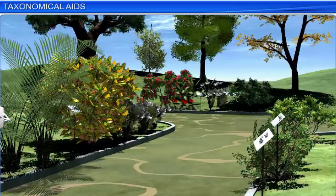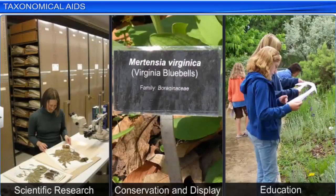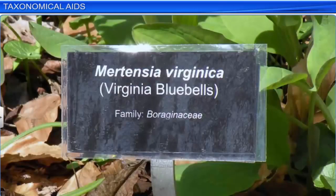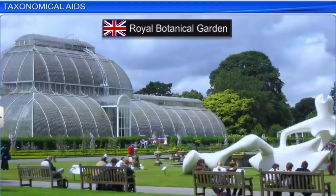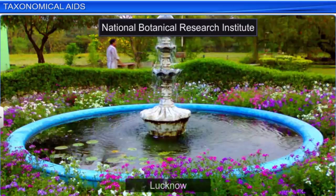Another place that provides taxonomical aid is a botanical garden. A wide variety of plants are cultivated in these gardens for scientific research, conservation, display, and education. Each plant is labeled with its botanical or scientific name and family. Some of the famous botanical gardens are at Kew in England, the Indian Botanical Garden in Howrah, and the National Botanical Research Institute in Lucknow.